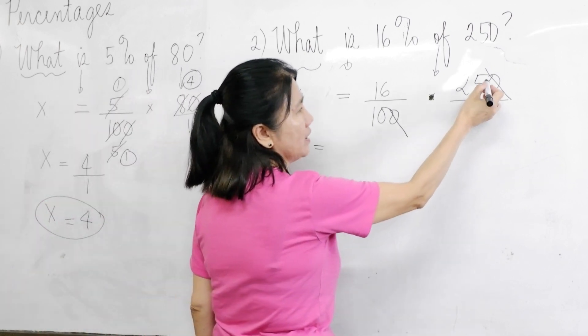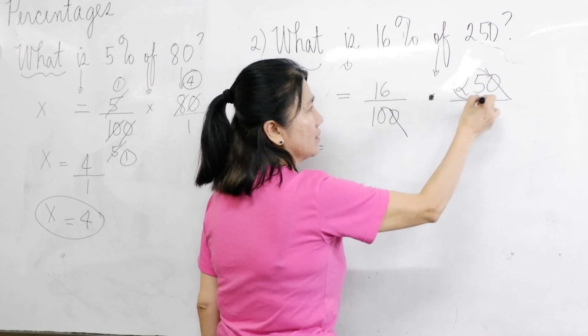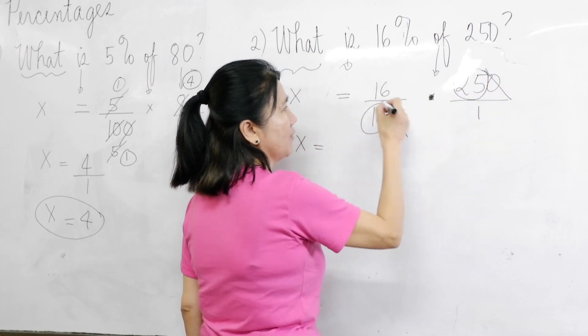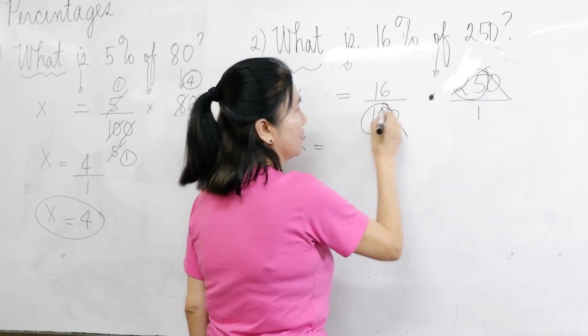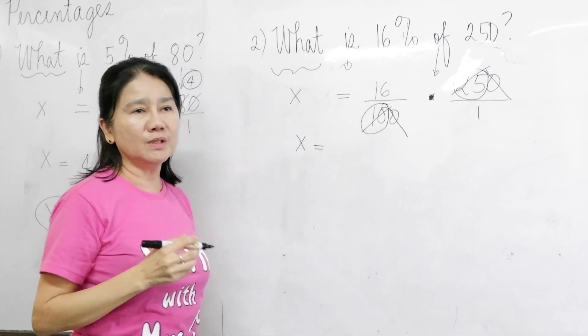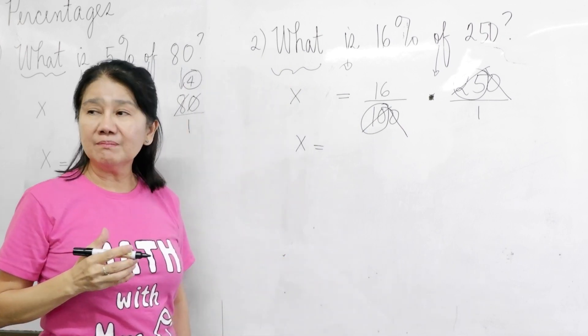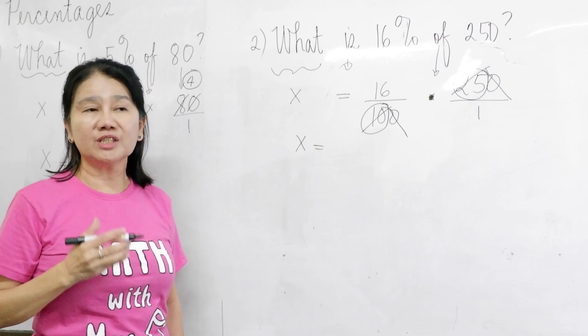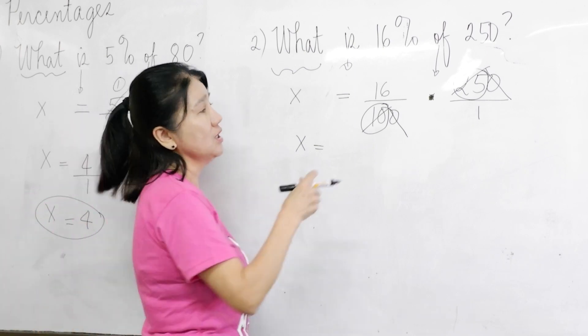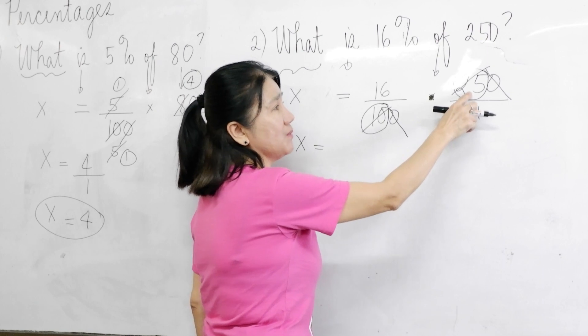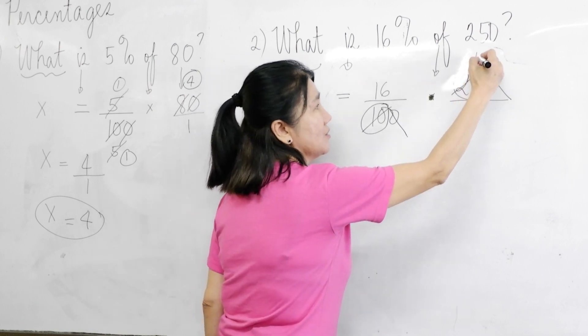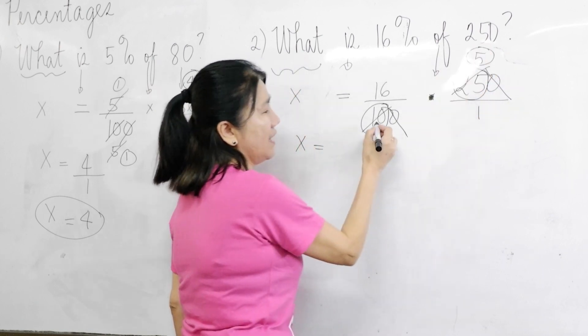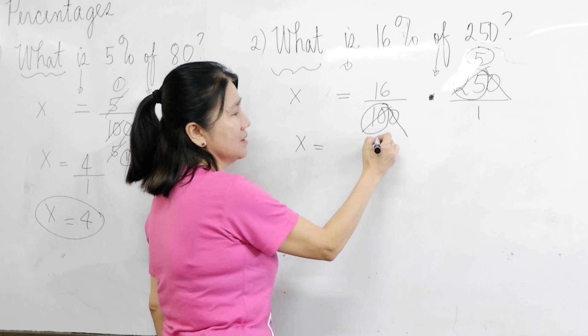You're left with 25 and 10. This one. And this one. 25 and 10. Then 25 and 10 are both divisible by? 5. 5. Meaning to say the GCF, or the greatest common factor is 5. So divide both sides by 5. 25 divided by 5 is 5.